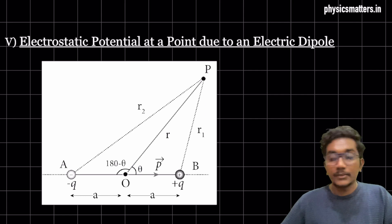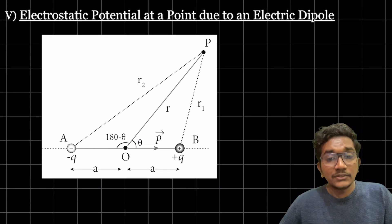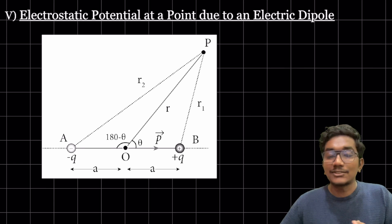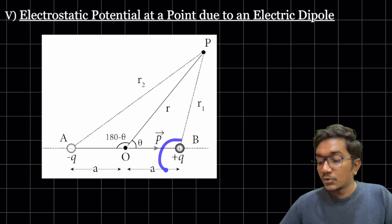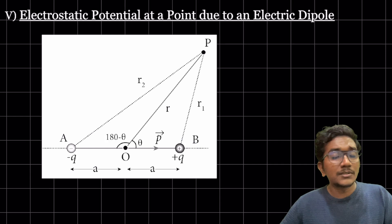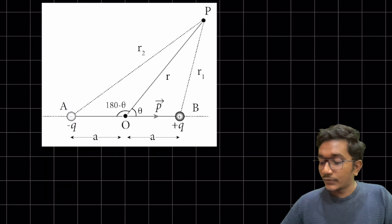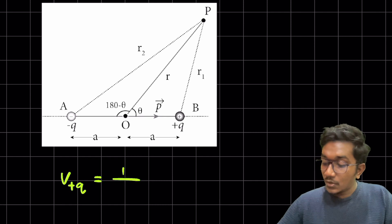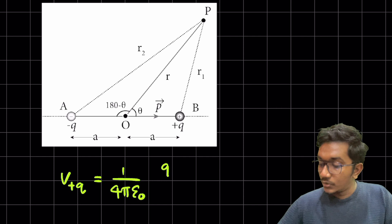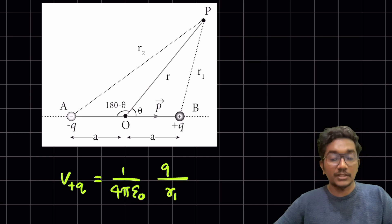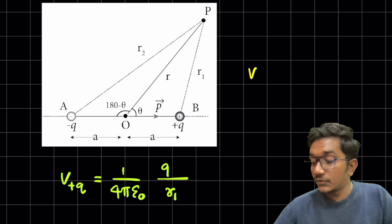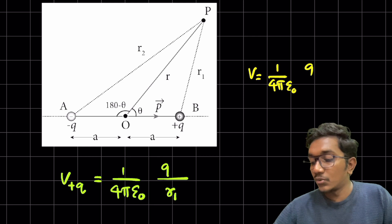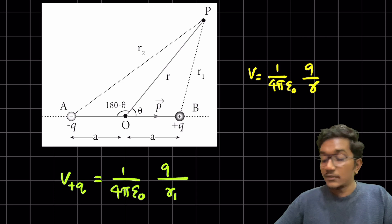Electric potential is not a vector quantity — it is a scalar quantity. So we can just add them algebraically. The potential due to plus q and the potential due to minus q, we simply add them. So V plus q is equal to 1 divided by 4 pi epsilon naught, q divided by r1. That is the potential, using the formula V = (1/4πε₀)(q/r) for electric potential due to a point charge, which we have already studied.